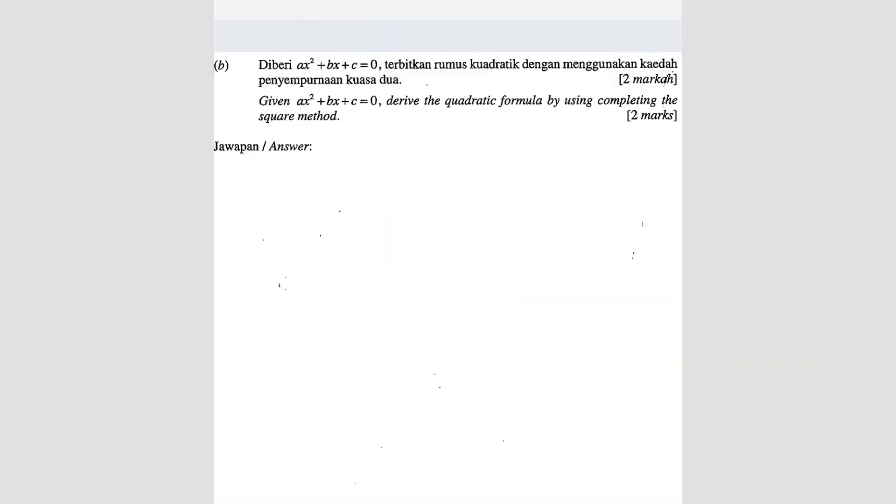Question B. Given A x square plus B x plus C equals to 0, so that's the quadratic equation, derive the quadratic formula by using completing the square method. So quadratic formula is x equals to negative B plus minus square root B square minus 4AC over 2A. So now we want to derive this formula using completing the square.